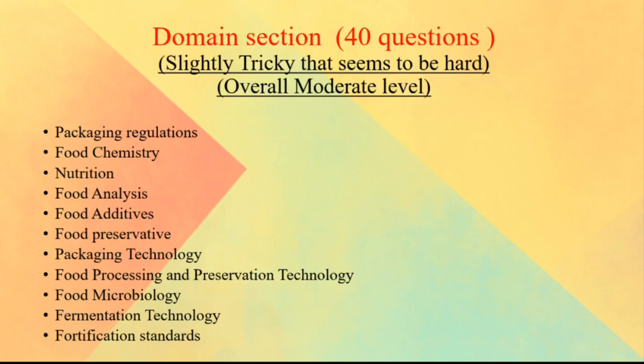The third section was the domain section, carrying the maximum number of questions — a total of 40. These questions were slightly tricky, ranging from moderate to slightly hard. Every area of food technology was covered, including packaging regulations, food chemistry, food nutrition, analysis, additives, preservation and processing techniques, packaging technology, food microbiology, fermentation technology, and fortification standards.